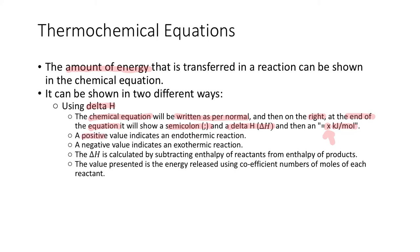A positive value indicates an endothermic reaction, which means that the energy from the surroundings goes into the system, meaning that the amount of chemical potential energy that the system will have at the end of the reaction is higher, meaning that the surroundings will give up energy — i.e. they'll get colder. So that's a positive value, that's an endothermic reaction, and a negative value will be an exothermic reaction. The delta H is calculated by subtracting the enthalpy of the reactants from the enthalpy of the products, but in reality it's actually calculated by the effect that it has on the surroundings.